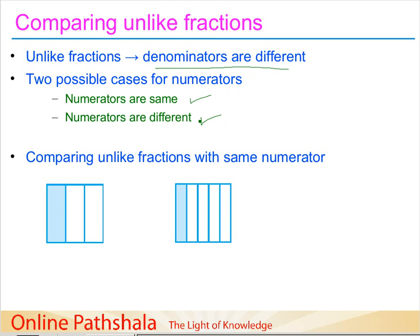Let us start by comparing unlike fractions when the numerator is the same, using the examples given. In figure 1, the fraction represented by the shaded portion is 1/3, because one part is shaded and the square is divided into 3 equal parts. In figure 2, there are 5 parts and we are considering 1 part out of these 5, so we write it as 1/5.